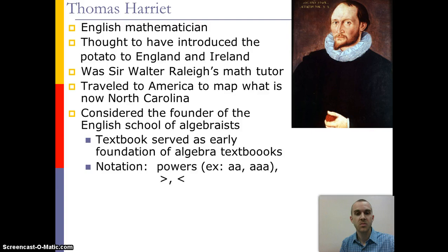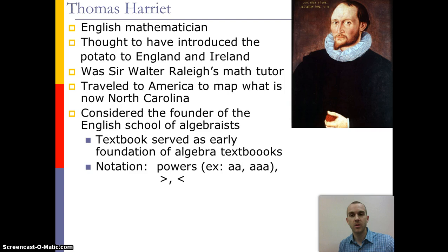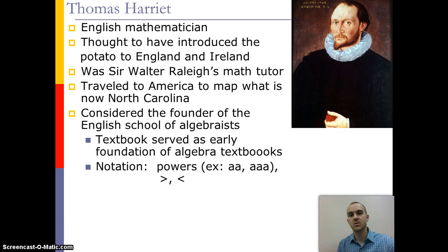Another famous mathematician at the time was Thomas Harriot of England. He was thought to have introduced the potato to both England and Ireland, and he was the tutor for Walter Raleigh, one of the great navigators who came to North America. He is considered the founder of the English School of Algebra. He created an early algebra textbook, used powers by writing repeated variables rather than exponent notation — writing 'aa' for a squared and 'aaa' for a cubed — and he also included the concepts of inequalities.